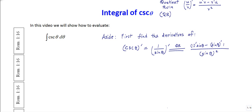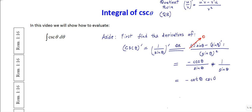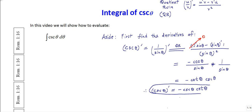We know right away that 1 prime is just a constant, so that's zero — it wipes out the first term. The derivative of sine theta is cosine theta, so we get minus cosine theta on top divided by sine theta times sine theta, since we have sine squared theta on the bottom. The ratio of cosine to sine is cotangent, and one over sine is cosecant.